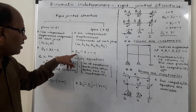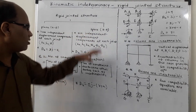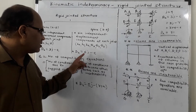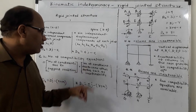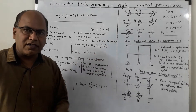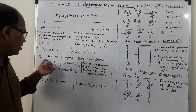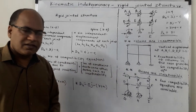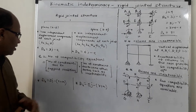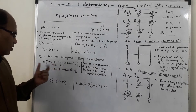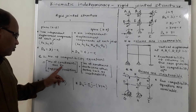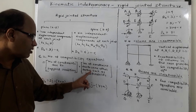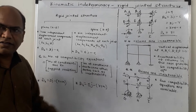Similarly, dk in case of 3D rigid jointed structures is given as 6j minus e, where 6j is 6 times the number of joints and e is the number of constraints provided. E is equal to the number of constraints or number of compatibility equations, and these compatibility equations or constraints equal the number of constraints due to support conditions plus the number of constraints due to other factors such as inextensibility.